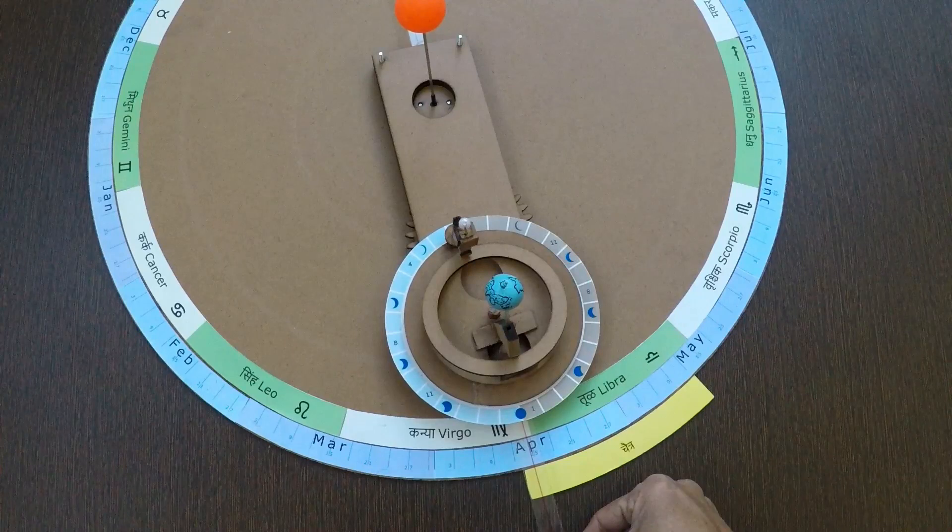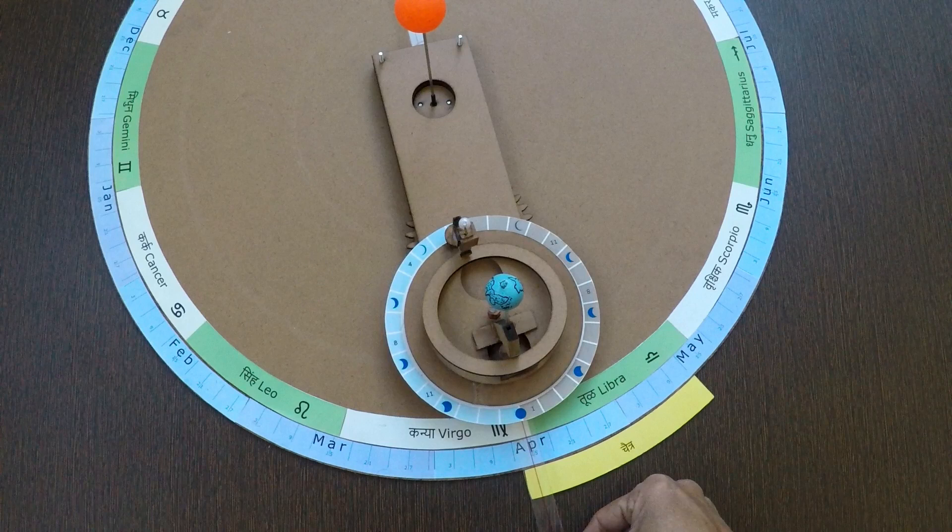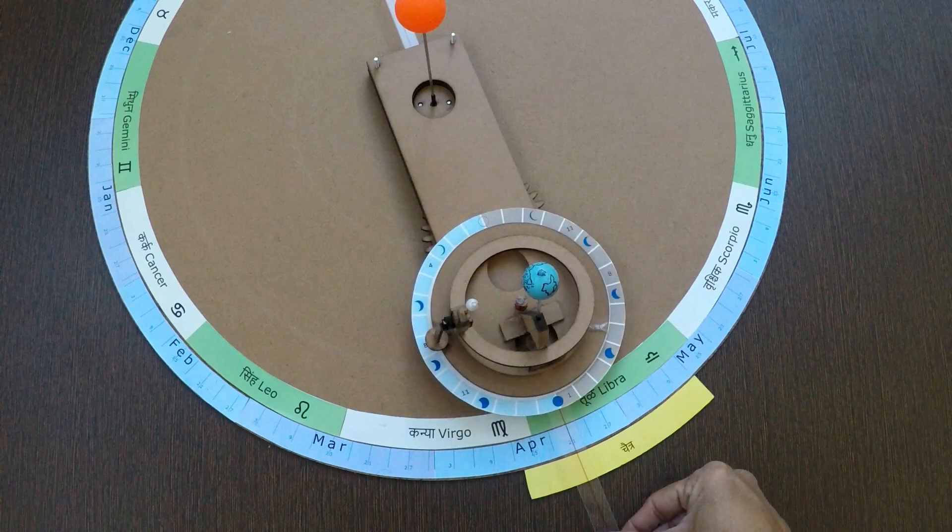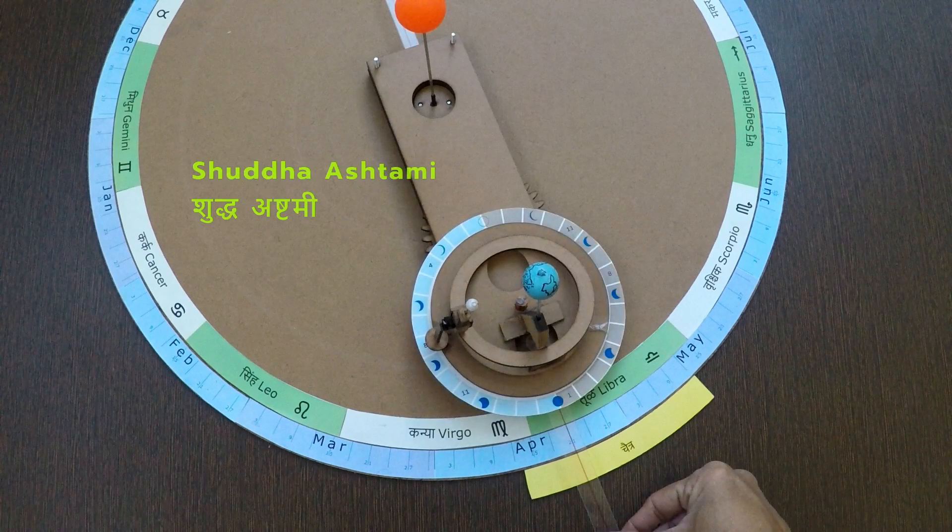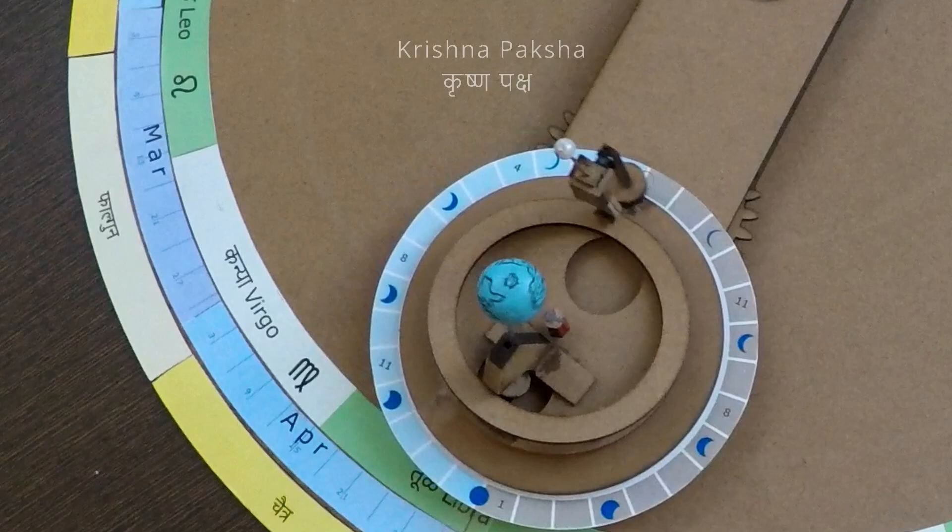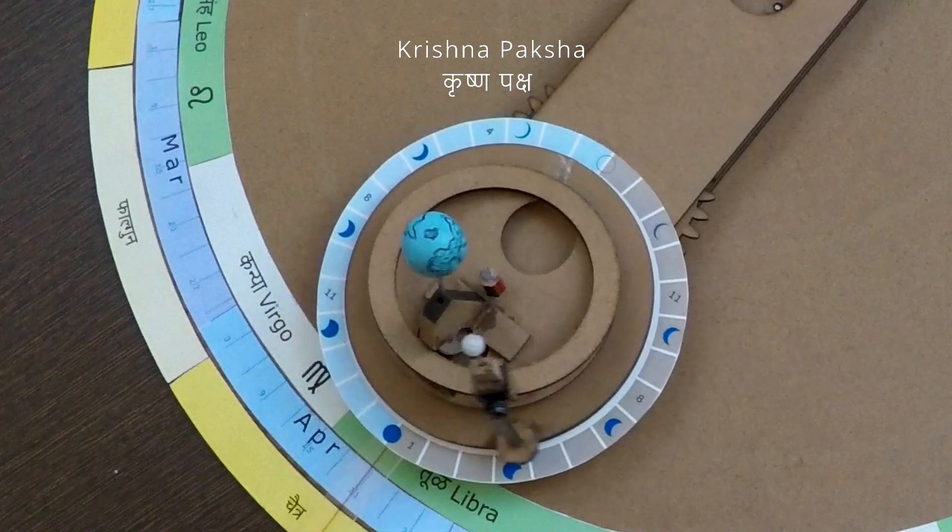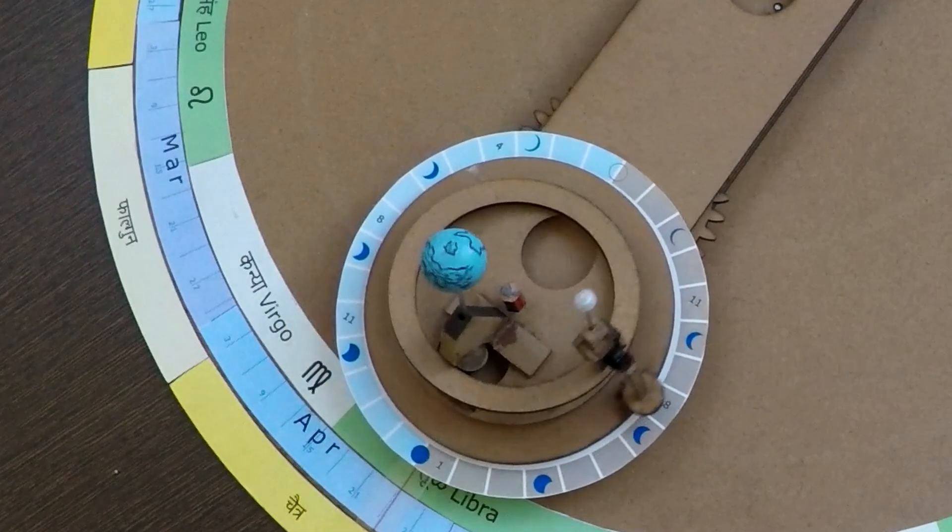Tithi in Shukla Paksha is prefixed with Shuddha, like Shuddha Pratipada, Shuddha Dvitiya, Shuddha Ashtami, and so on. Tithi in Krishna Paksha is prefixed with Vadya: Vadya Pratipada, Vadya Dvitiya, Vadya Ashtami, and so on.